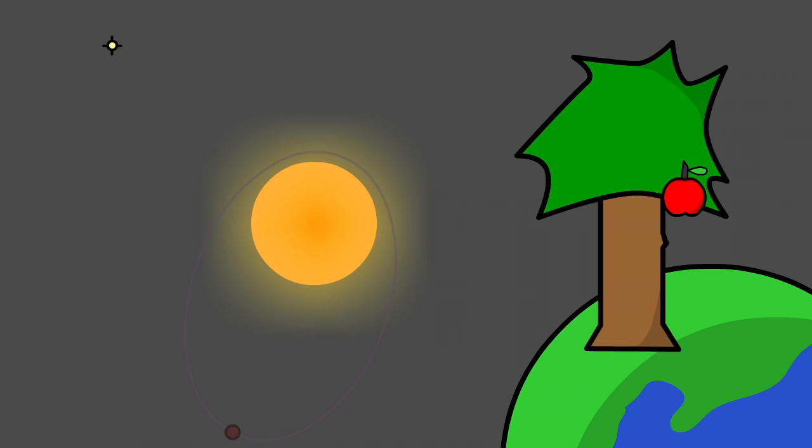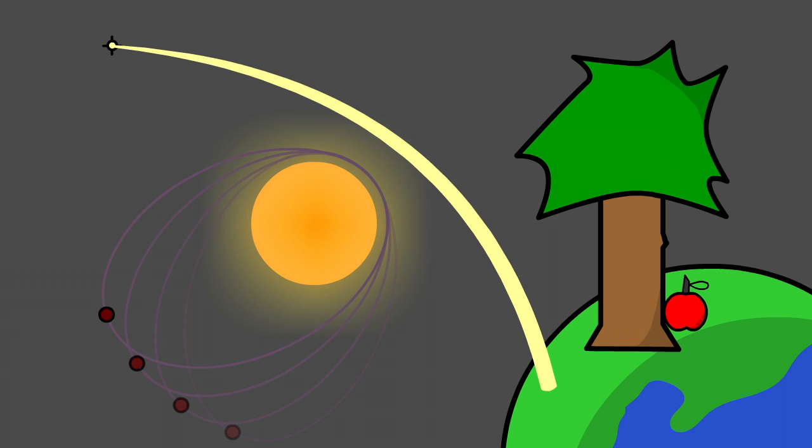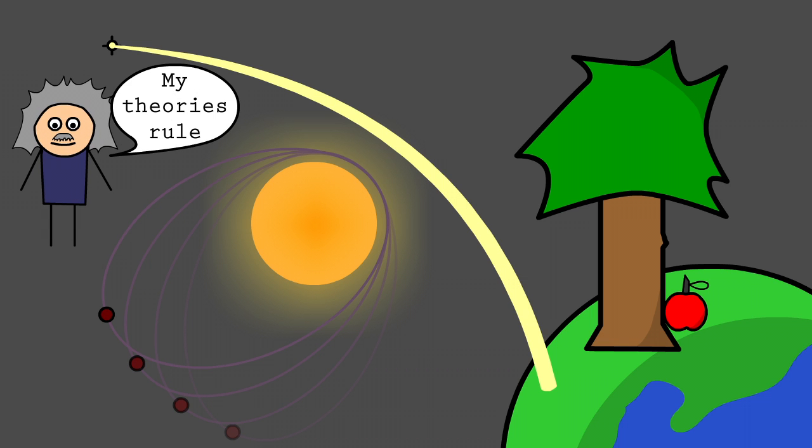Newton's universal gravitation did nothing to address why gravity occurs and incorrectly predicted the precession of Mercury's orbit and the deflection of light rays by gravity. With Einstein's new theory of general relativity, curved spacetime was used to explain gravity and it made precise predictions where Newton's law fell short.